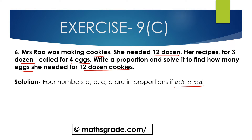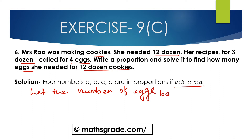Let the number of eggs be x. For 3 dozen cookies, the recipe called for 4 eggs. So 3 dozen cookies require 4 eggs, and we need to find the number of eggs for 12 dozen cookies.